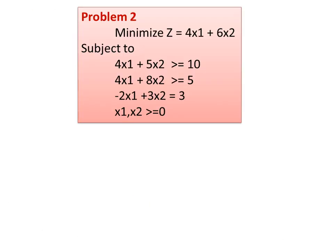Now I take another problem. Minimize z equal to 4x1 plus 6x2, subject to 4x1 plus 5x2 greater than or equal to 10, 4x1 plus 8x2 greater than or equal to 5, and minus 2x1 plus 3x2 equal to 3. x1, x2, s1, s2 are greater than or equal to 0. The first and second constraints require subtracting surplus variables to convert to standard form.